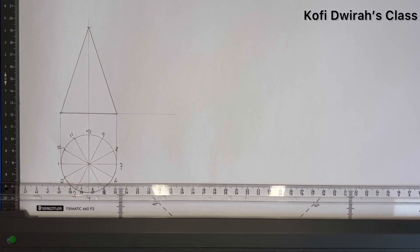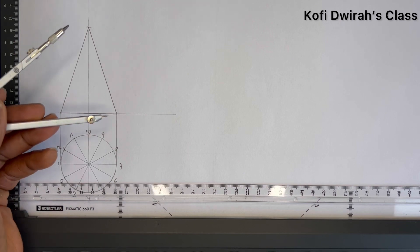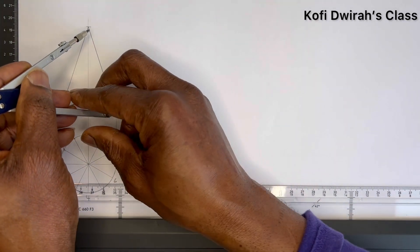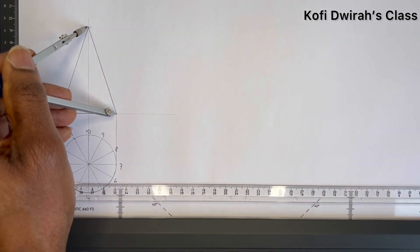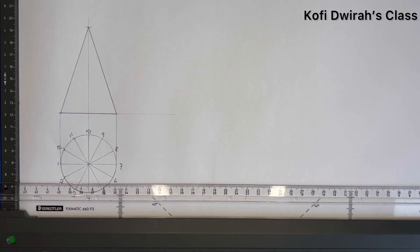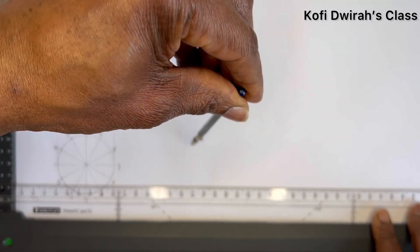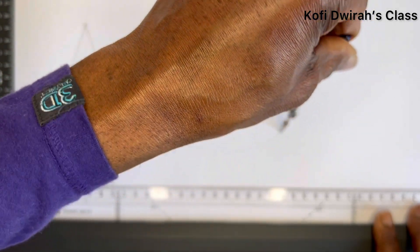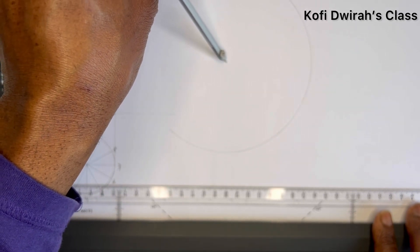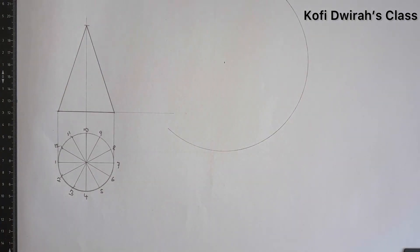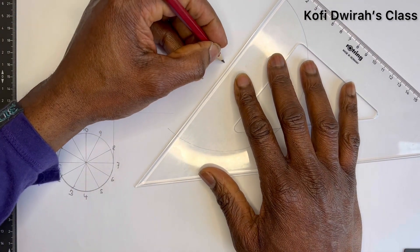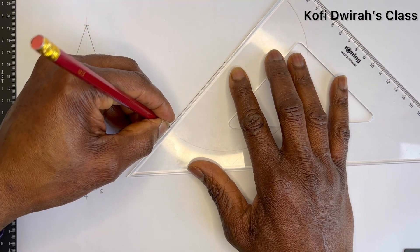Now we are going to draw the surface. With your compass or divider, you measure the distance from here to here — that is the distance from here to this side, which is the slant height. Then with that radius you draw an arc. Then with your set square, you draw a line from here to this end like this.